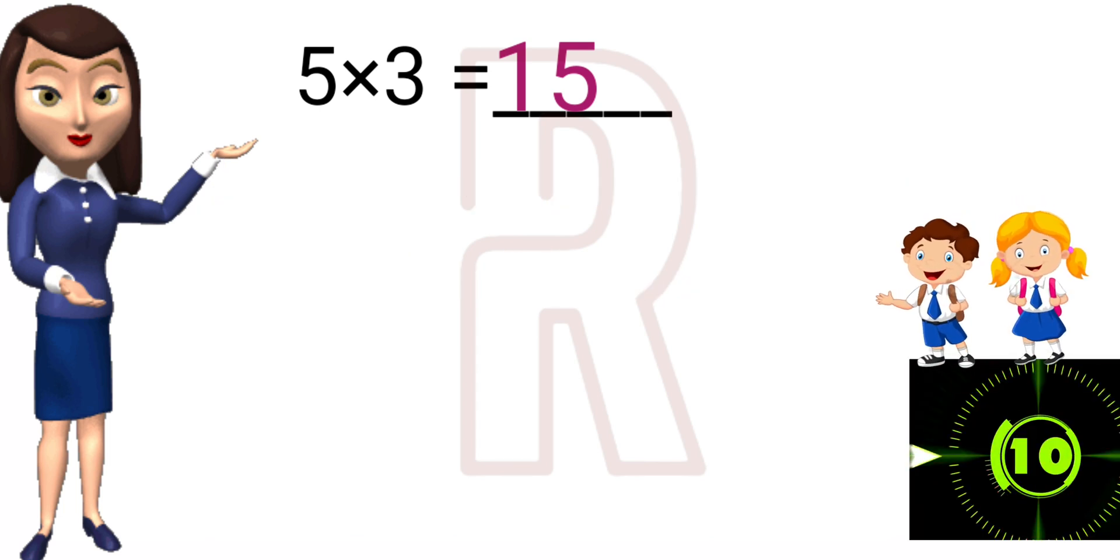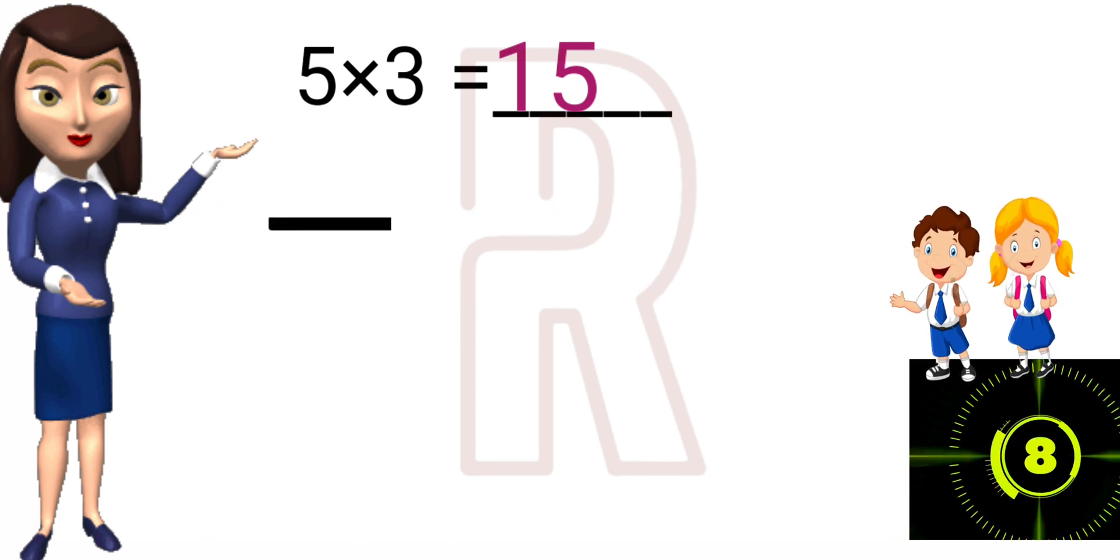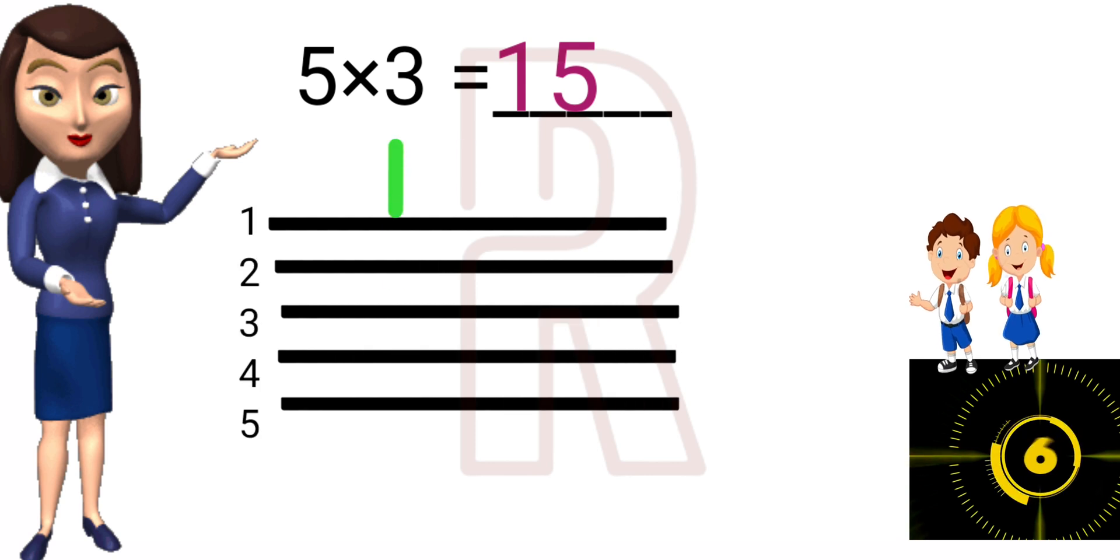So let's start our timer. 5 into 3. 5 horizontal lines: 1, 2, 3, 4, 5. And 3 vertical lines: 1, 2, 3.